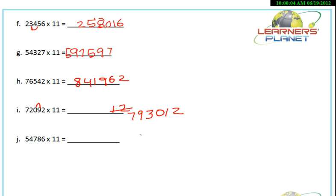Similarly, this example: 54786 into 11. Write 6 as it is. 8 plus 6 is 14 — write 4 and carry 1. 7 plus 8 is 15 plus 1 carried is 16 — carry 1. 4 plus 7 is 11 plus 1 is 12 — carry 1. 5 plus 4 is 9 plus 1 is 10 — write 0 and carry 1. Then 5 plus 1 is 6. So 54786 into 11 gives you 602646.